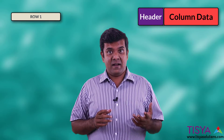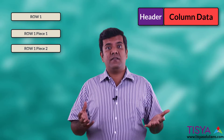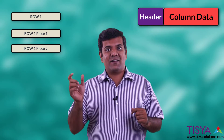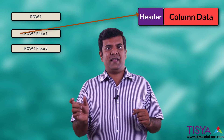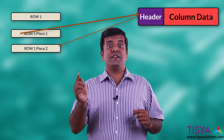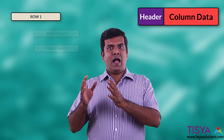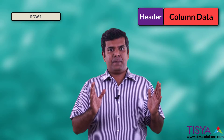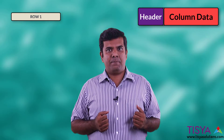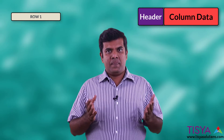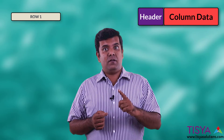On the other hand, if there are multiple pieces for the same row, then the piece header would also have information about the other pieces of this row. After the header comes the column data. The columns are stored in the same order in which you created the table.